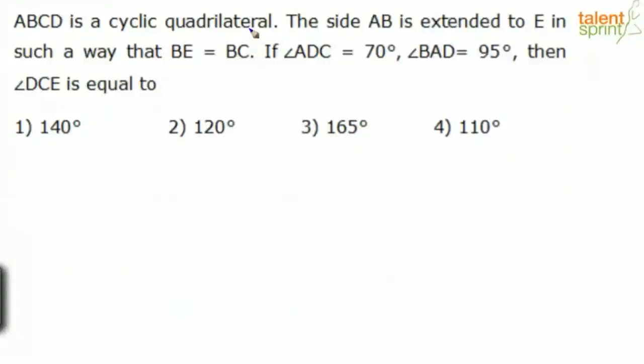ABCD is a cyclic quadrilateral. The side AB is extended to E in such a way that BE equals BC. Angle ADC is 70 degrees, angle BAD is 95 degrees. Then angle DCE is equal to what?